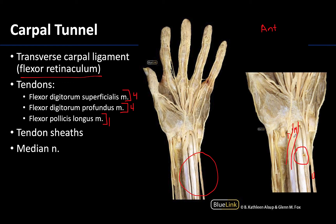It does tend to run superficial to the tendons and more laterally than most of them — not so much in terms of the flexor pollicis longus tendon, but it is generally more superficial. So usually it's distinguishable in that way. You can see right here the same median nerve as this one.